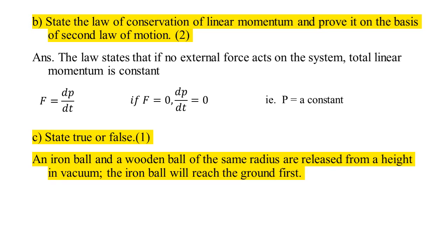True or false: An iron ball and a wooden ball of the same radius are released from a height in a vacuum — the iron ball will reach the ground first. In a vacuum, for any body, the acceleration due to gravity is the same. Therefore, this statement is false.